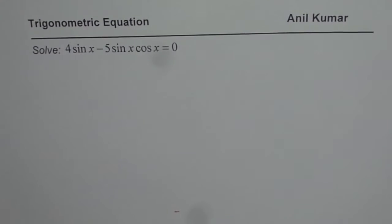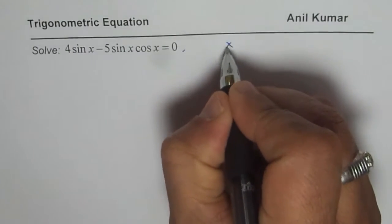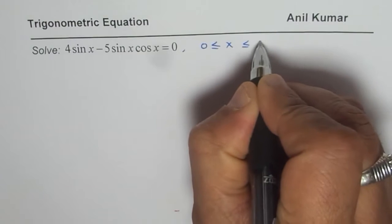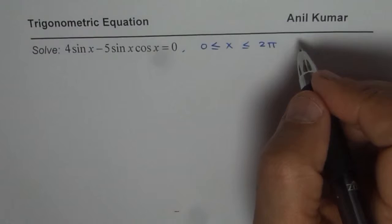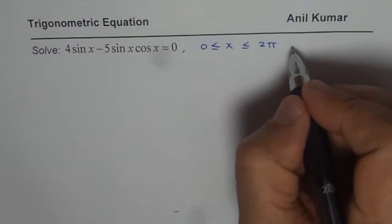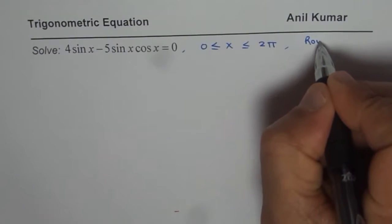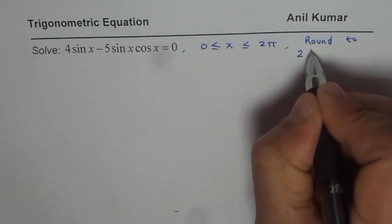The question is solve 4 sin x minus 5 sin x cos x equals to 0. Let me add the domain for this where x is greater than or equal to 0 but less than or equal to 2 pi. So in this case we will solve it in radians.